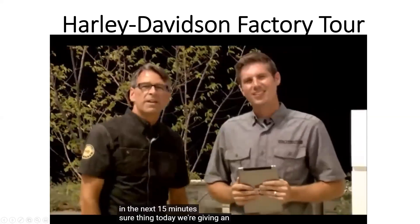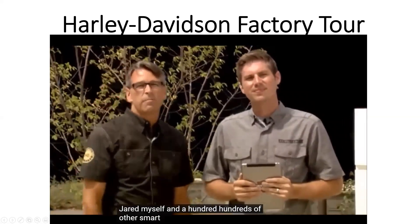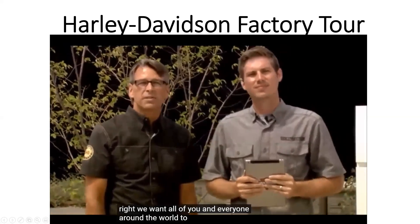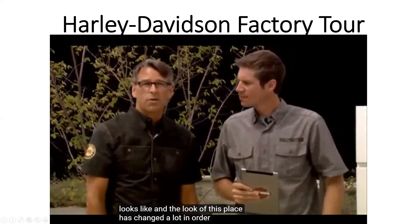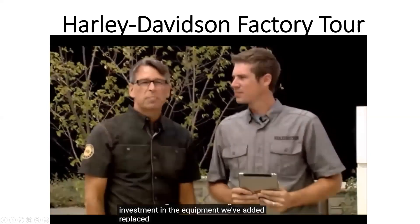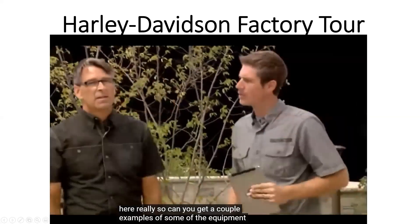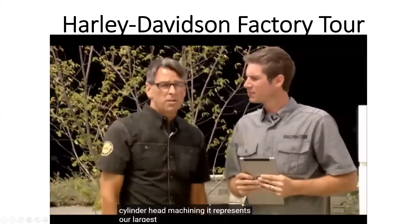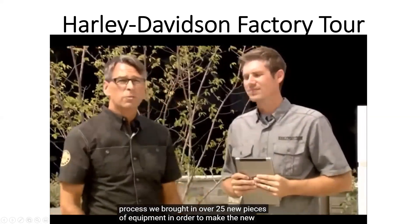Today we're giving an exclusive behind-the-scenes look at what Jared, myself, and hundreds of other smart, passionate people can produce at our Pilgrim Road factory. We want everyone around the world to see what a world-class lean manufacturing facility looks like. The look of this place has changed a lot in order to build the Milwaukee 8 — we've made significant investment in the equipment. We've added, replaced, or retooled over 500 machines here. One example is in cylinder head machining, which represents our largest investment. We brought in over 25 new pieces of equipment to make the new Milwaukee 8 engine.